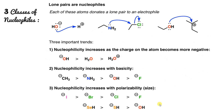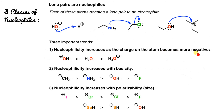Classes of nucleophiles: lone pairs are nucleophiles — each of these atoms donates a lone pair to an electrophile. OH- has high electron density so it loses electron to H+; NH2 also donates. The Cl in an alkyl chloride attracts the electron toward itself, generating a positive charge, and NH2 completes the reaction. That's how lone pairs work as nucleophiles.